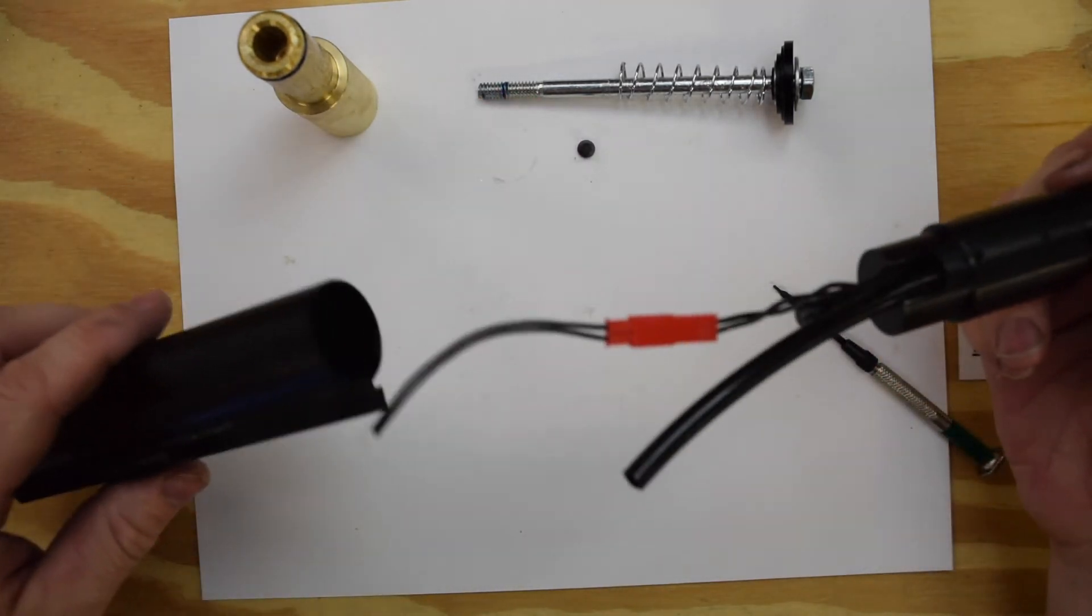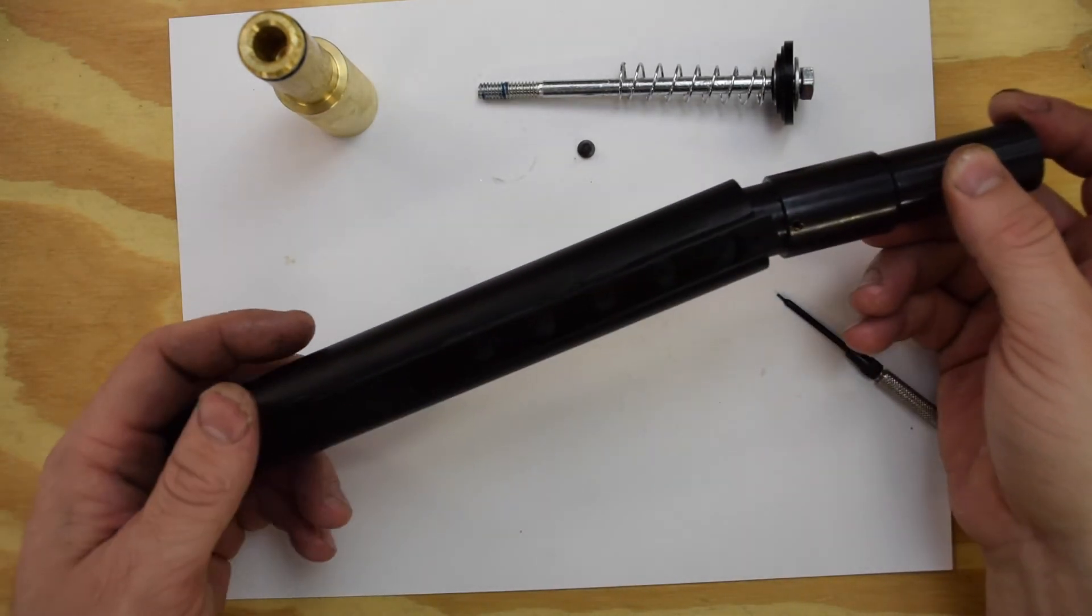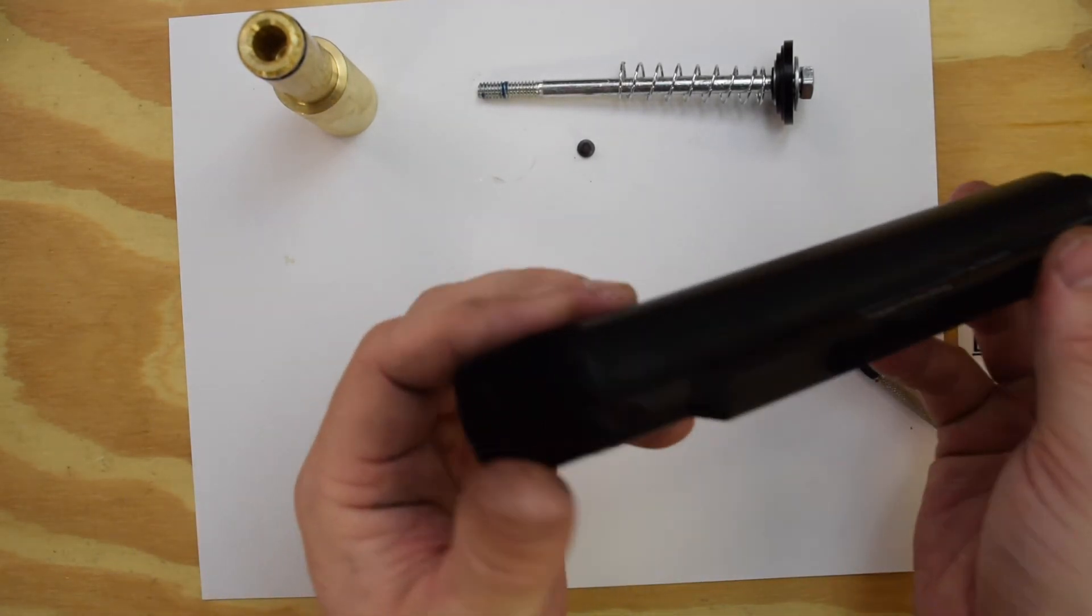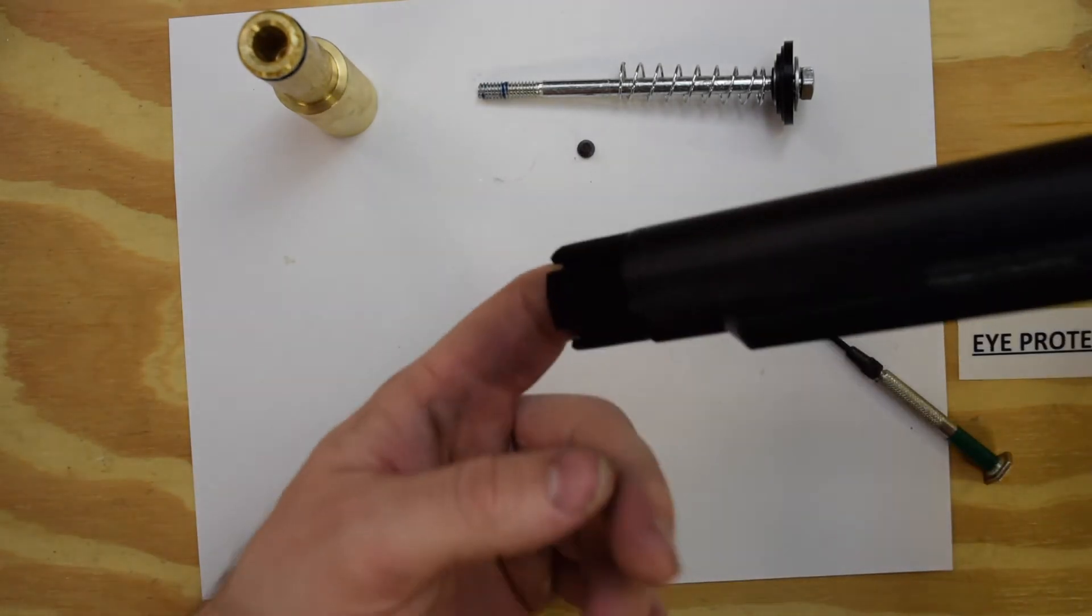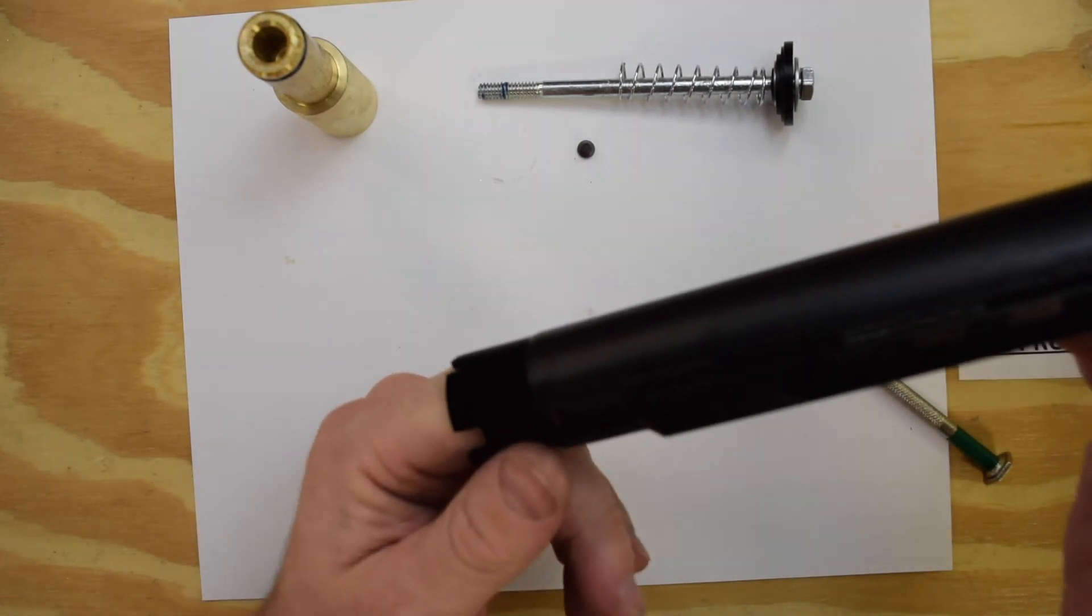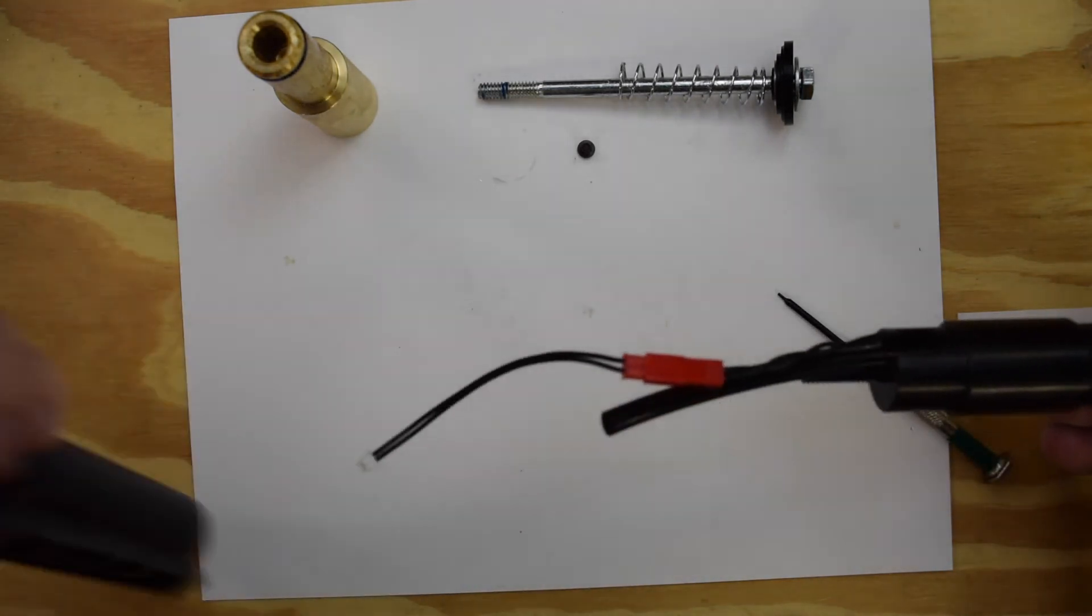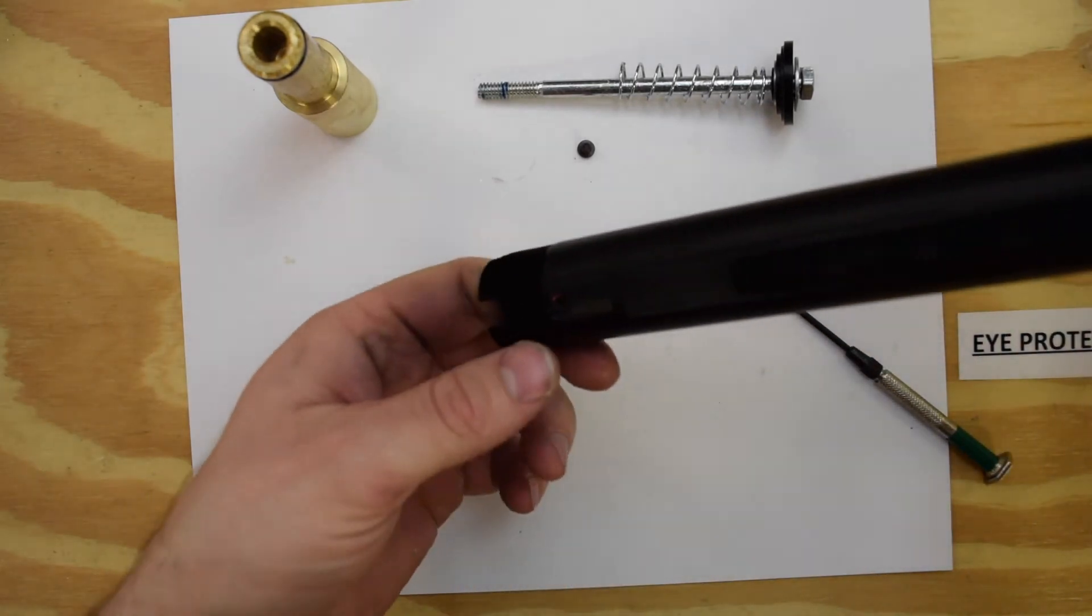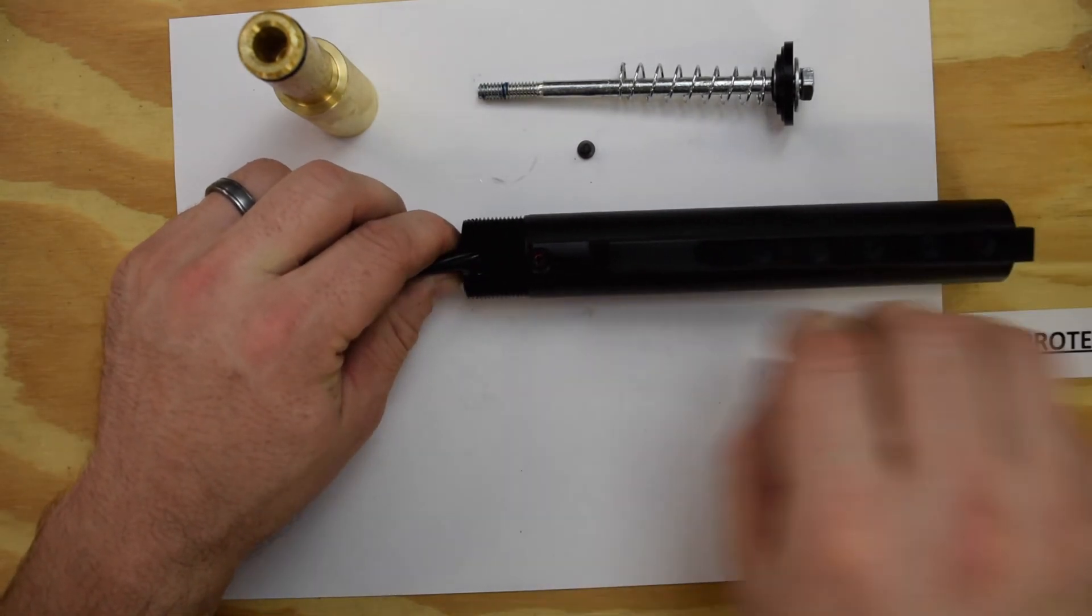And then this can go back into your buffer tube. The threaded hole here goes on the bottom side of the buffer tube. That's where that little screw we took out at the beginning goes into. Just make sure you guide your wiring and your airline through. As always when dealing with wiring, don't force anything. If it doesn't want to go back up, check what's sticking and try again.